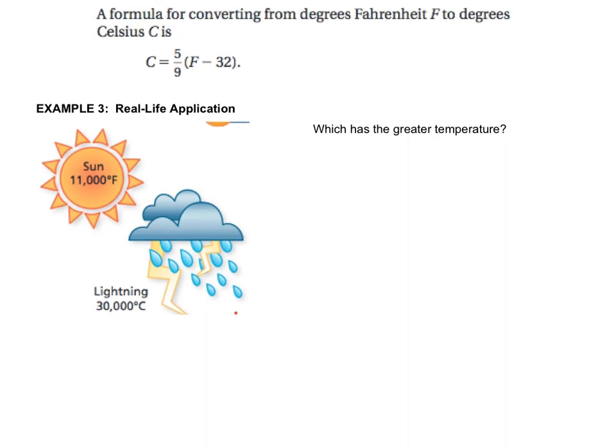They give us a formula, and let's just plug stuff in and figure it out. You can do it one of two ways. The first way would be to take the sun temperature, plug it in for F, and find out what the sun would be in Celsius. The other way is to take the lightning, plug it in for the Celsius, and then find the Fahrenheit value of the lightning. Based on the formula, it looks like it might be easier to plug the temperature for the sun in and then solve for C. So I'm going to write the formula: C equals 5 ninths times F minus 32. And now I'll plug in the temperature for the sun: 11,000 minus 32.